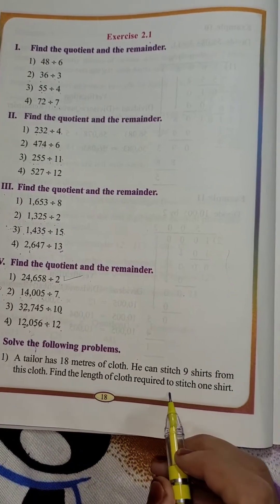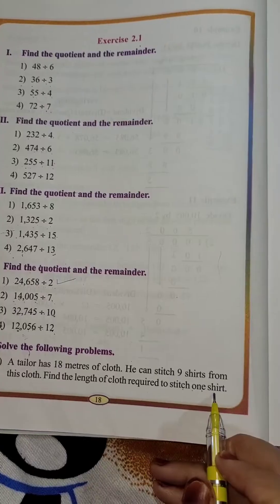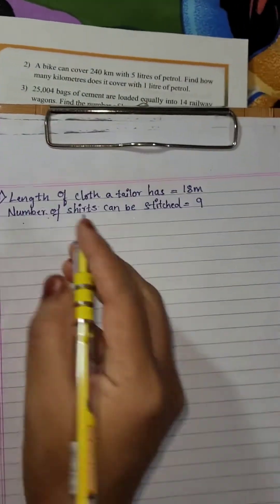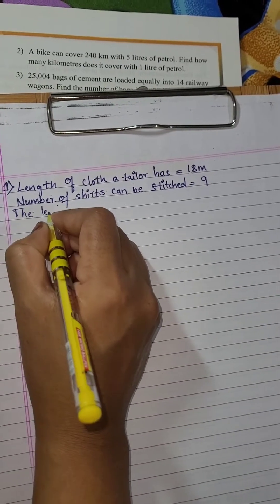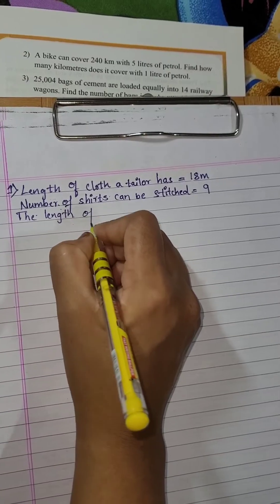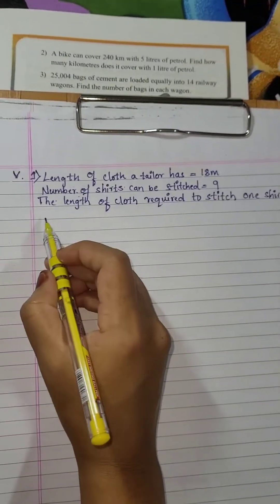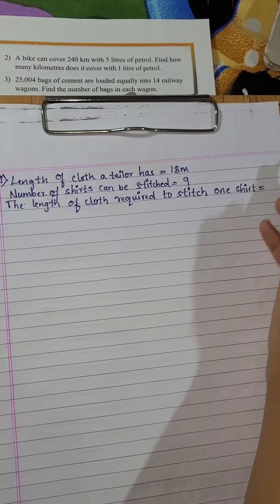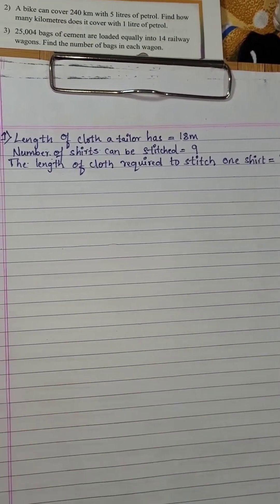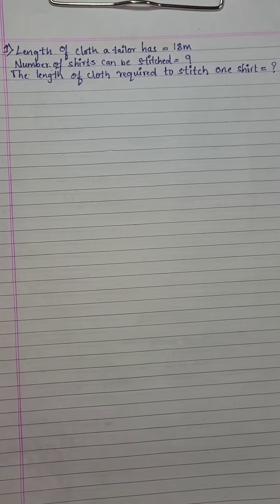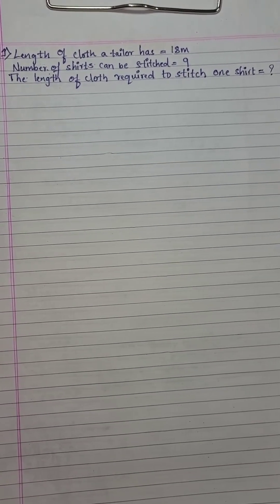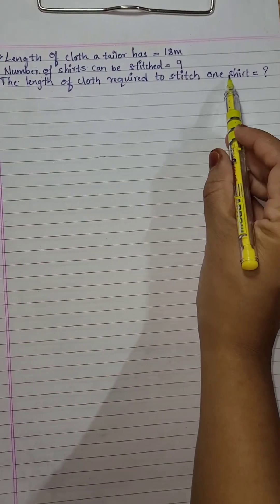What you have to find out: the length of cloth required to stitch 1 shirt — that will be a question mark. We have to divide it because we are finding the length of cloth required to stitch 1 shirt.